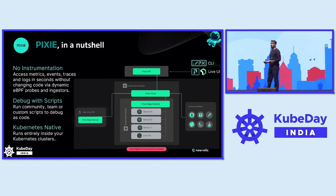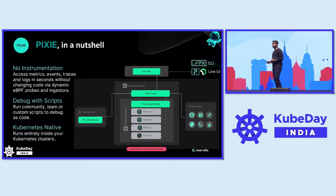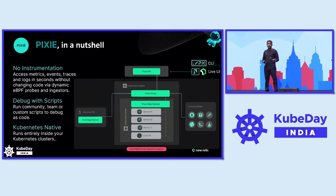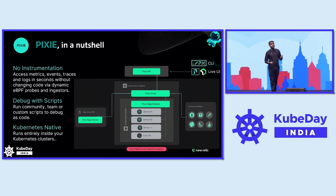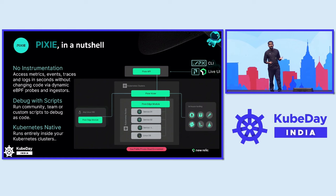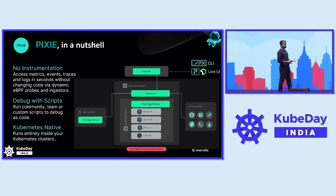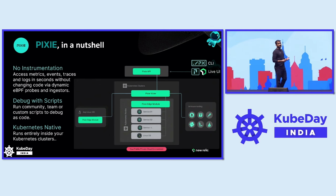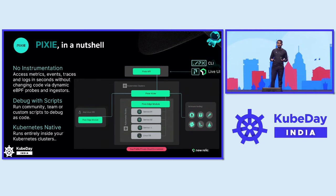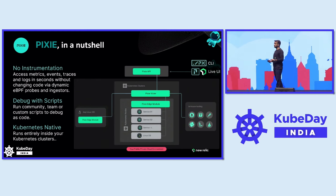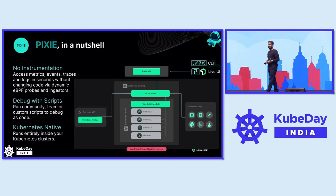You can view, query, or visualize your data using the Pixie CLI, Pixie's Live UI, or the Neuralic platform. The two main components which help create Pixie's magic are Pixie's Vizier and Pixie's Edge module.